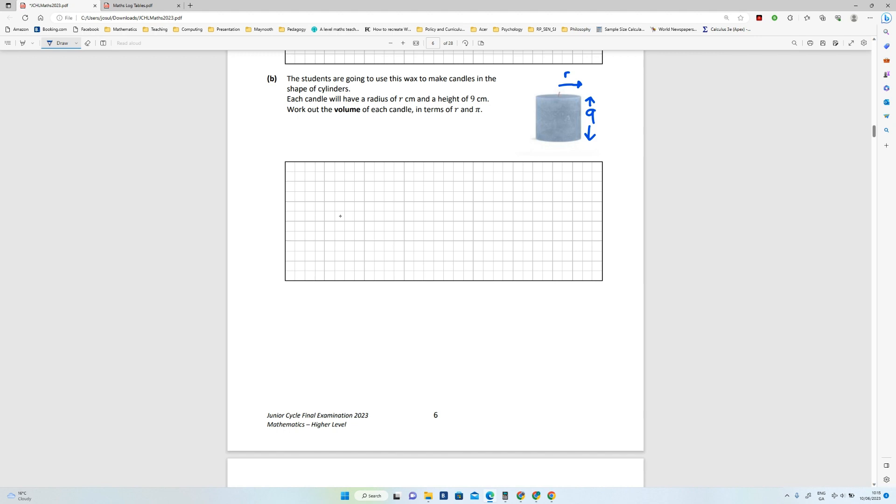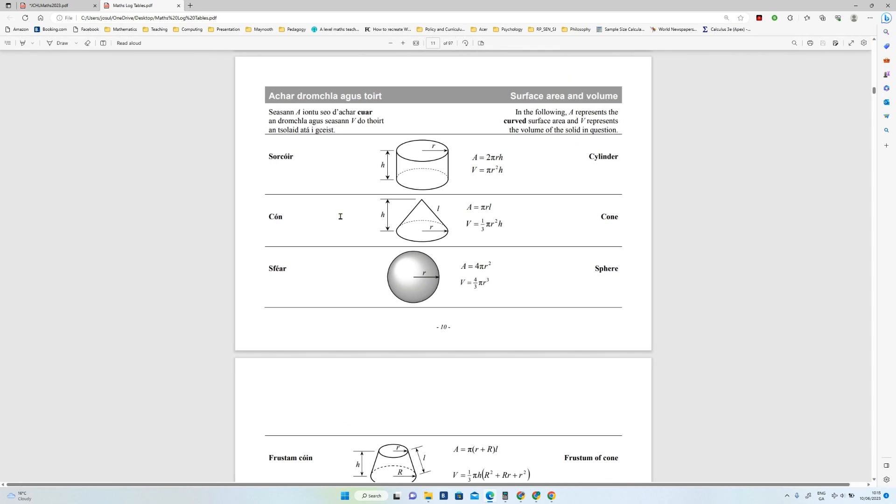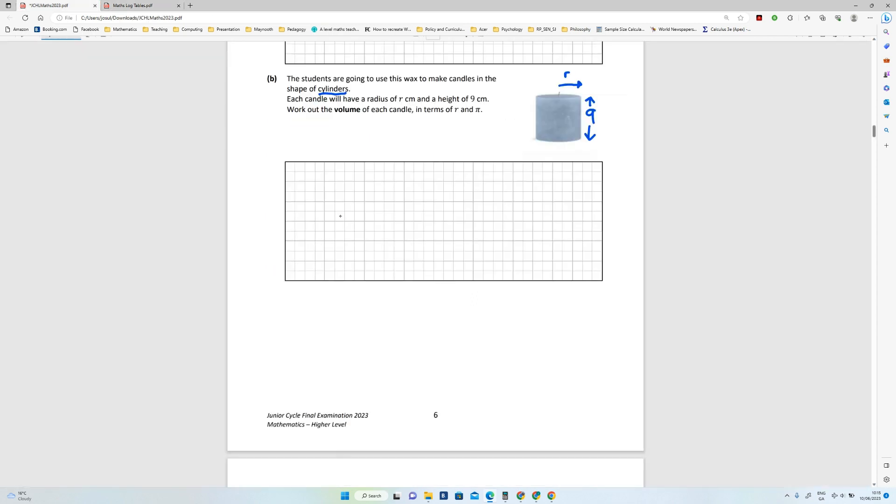Work out the volume of each candle in terms of r and π. Okay, so it's a cylinder, they've mentioned that word. So you go to your log tables if you don't remember it, and there you go, that's the one we need to work with. V equals πr²h. So first thing I'll do is I'll write that down.